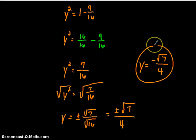So the coordinate for P is going to wind up being 3 fourths and negative square root of 17 divided by 4.